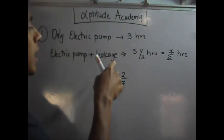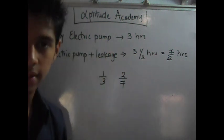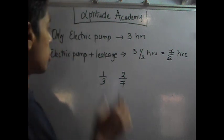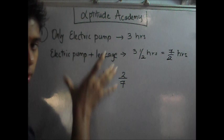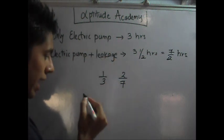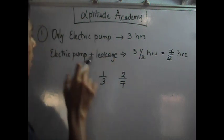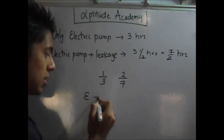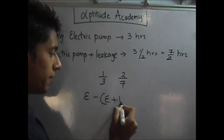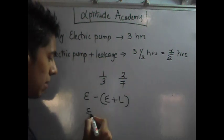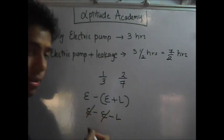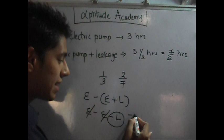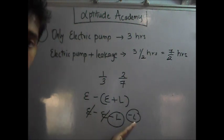Now, if it fills it in 3 hours, every hour it does how much work? 1 over 3. This one does how much work? If it fills it in 7 by 2 hours, every hour it does 2 by 7 of the total work. Now, you have electric pump. You know that the leakage is negative work, it removes water.